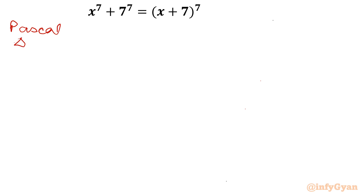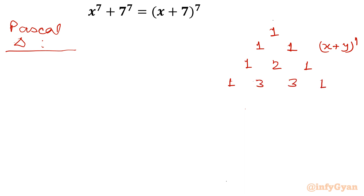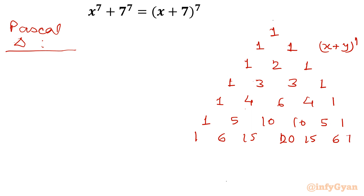Let me write Pascal's triangle. It is very useful here because we need (x + 7)⁷. For degree 1: 1 1. Degree 2: 1 2 1. Degree 3: 1 3 3 1. Degree 4: 1 4 6 4 1. Degree 5: 1 5 10 10 5 1. Degree 6: 1 6 15 20 15 6 1. And degree 7, which is required here: 1 7 21 35 35 21 7 1. These are our required coefficients.